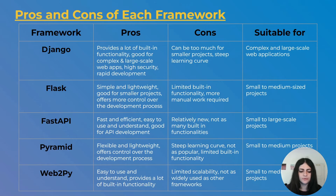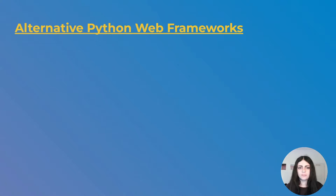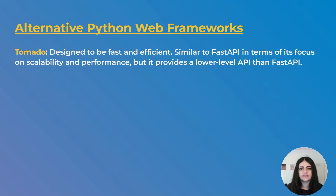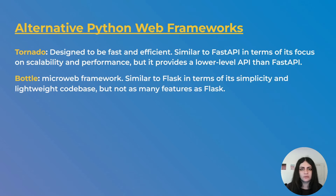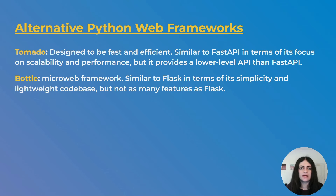There are also some alternative Python web frameworks worth mentioning. Tornado is designed to be fast and efficient — similar to FastAPI in its focus on scalability and performance — but provides a lower-level API. Bottle is a micro web framework very similar to Flask in simplicity and lightweight code base, but it doesn't have as many features as Flask. It feels like a trade-off between simplicity and features, which is why it's not as popular.